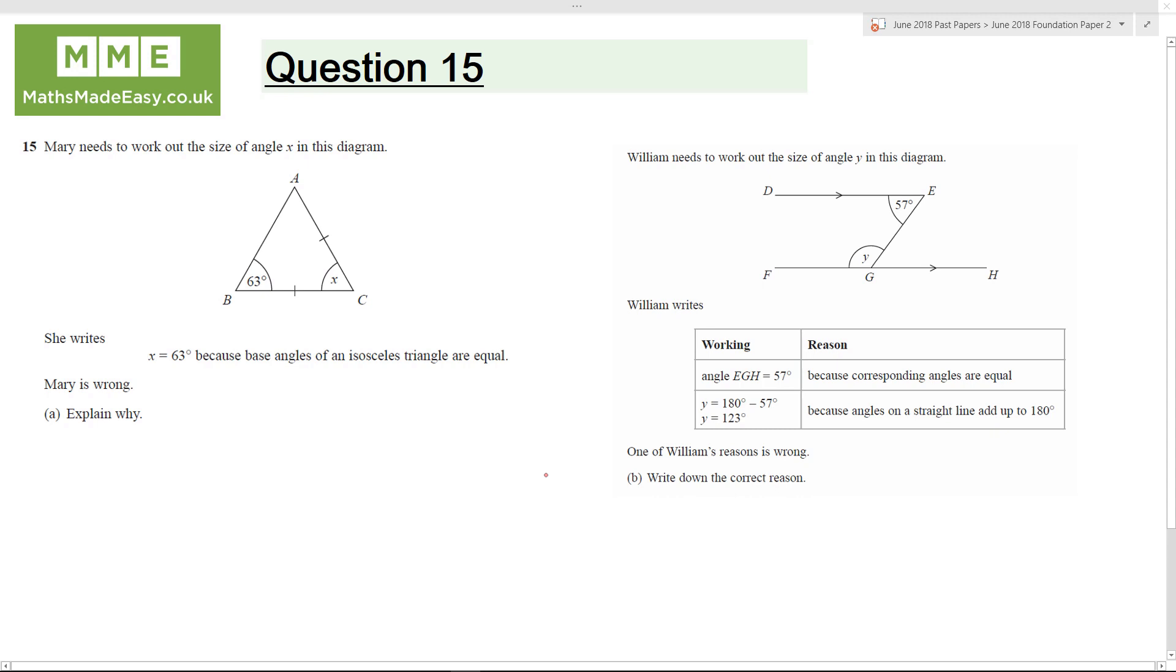Mary is wrong. She's wrong because the base angles in an isosceles triangle are equal. So if these two lengths are equal, the same as these two, then it would be 63 and 63 where x would be the top angle. So she is wrong because only the base angles in an isosceles triangle are equal. So that is the reason you would give for part A.